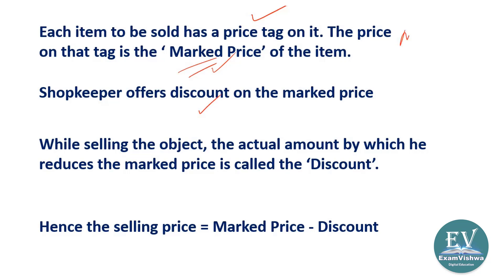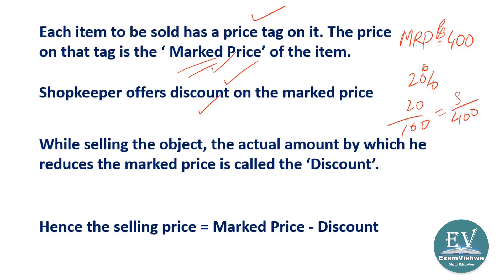Suppose the market price is 400 rupees. The shopkeeper gives a 20 percent discount — that means a discount of 80 rupees on 400. So 400 minus 80 equals 320 rupees, which is the selling price. The selling price is the difference: market price minus discount.